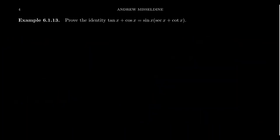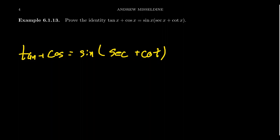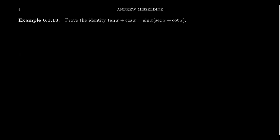Let's prove the identity: tangent x + cosine x = sine x · (secant x + cotangent x). The name of the angle doesn't matter much — call it x or theta. It is important that you do write it though. Don't write things like 'tangent plus cosine equals sine times secant plus cotangent' without the variable — the variable is part of the function and must be included. It's bad notation to omit the angles, and if I were grading an exam I would deduct points for that.